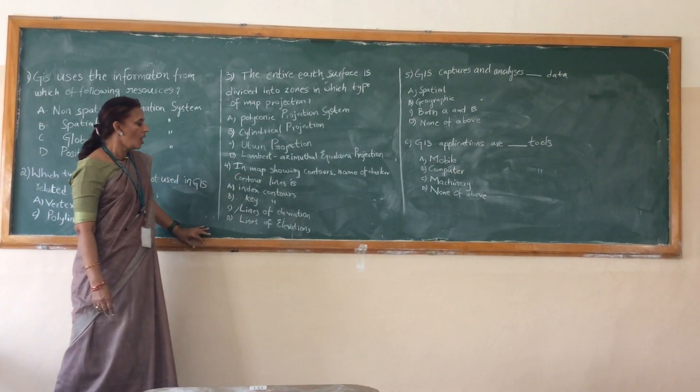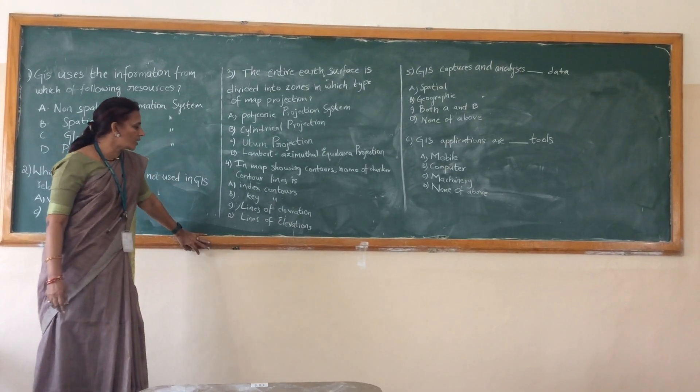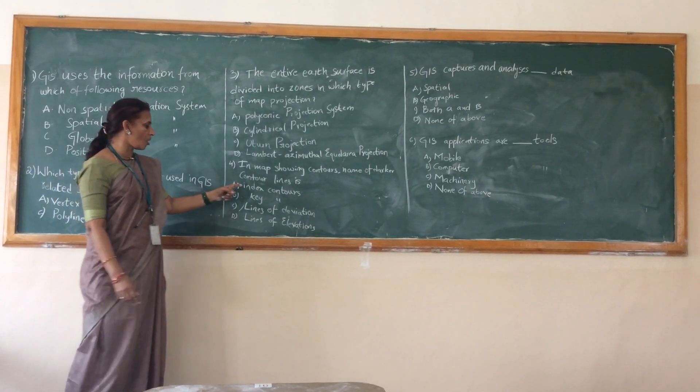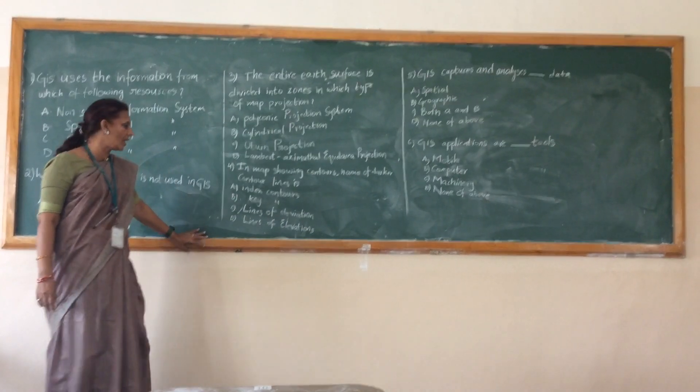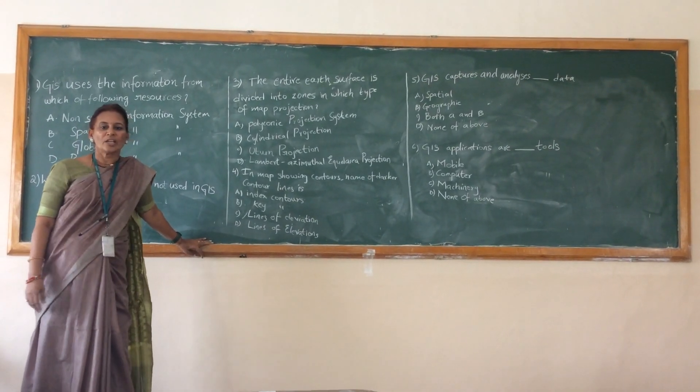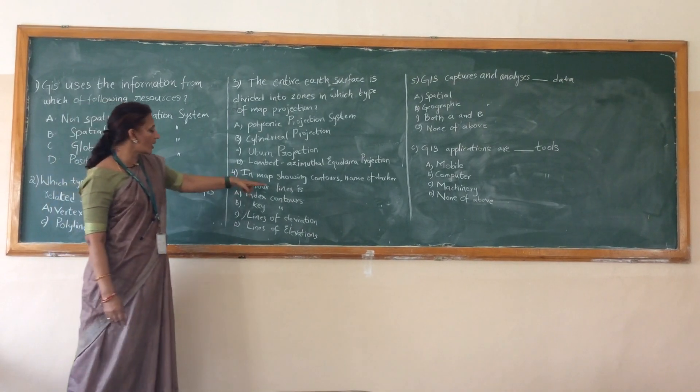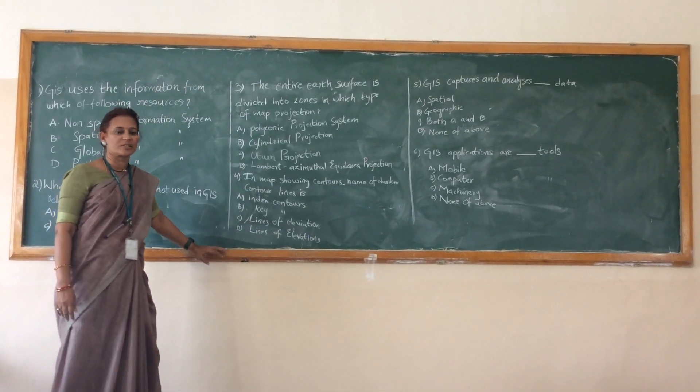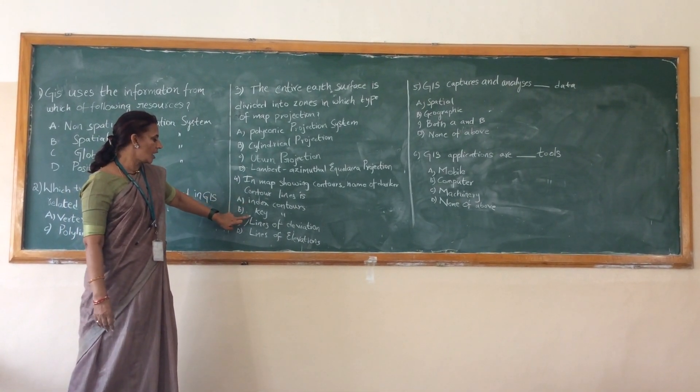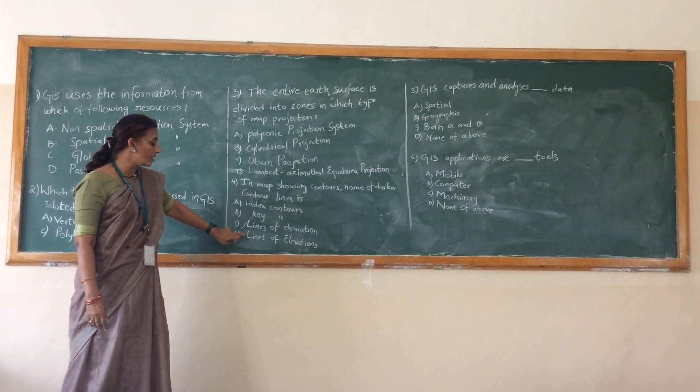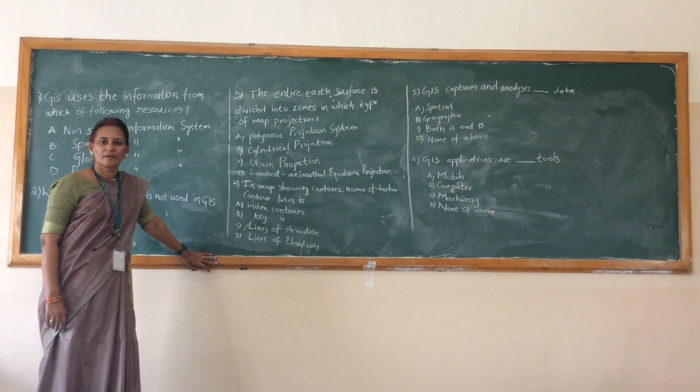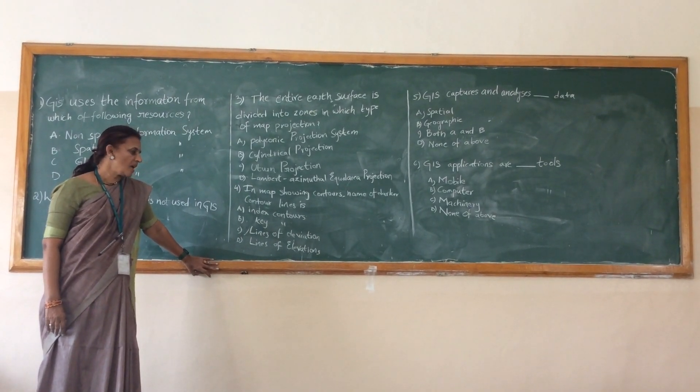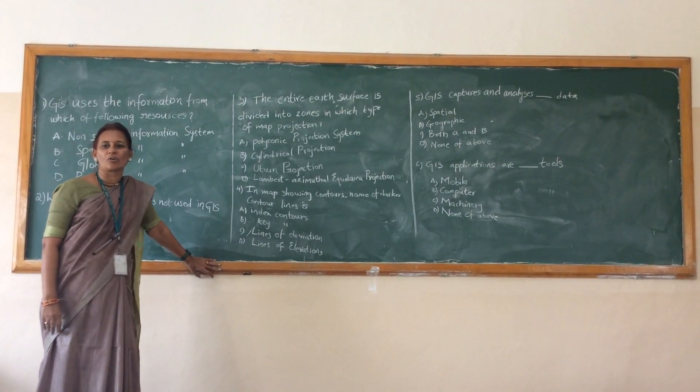In map showing pointers, name of the dark and counter line is index counters. Key counters are lines of deviation or lines of elevation. Which is nothing but if you are putting these counter lines only, you will be able to answer this one. Whether it is an index, key counters, lines of deviation or lines of elevation. Which is the correct answer? Key counters? Index counters are not. Why key counters are not?